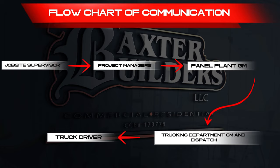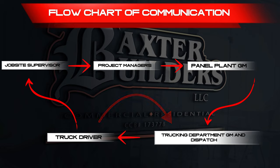The truck driver will communicate to the jobsite supervisor 24 hours prior to the delivery or return to verify that the jobsite is ready. If the situation has changed and the jobsite is not ready, the truck driver will need to communicate with trucking dispatch. The trucking dispatch will communicate with the panel plant general manager to inform them that the delivery or return will need to be rescheduled.